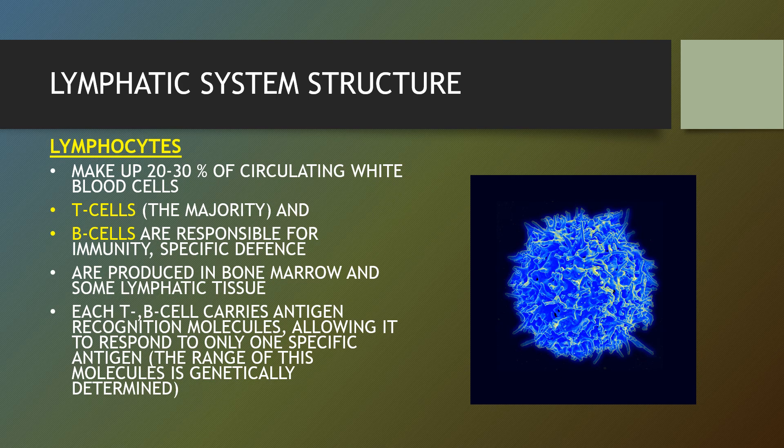Lymphocytes are the cells responsible for the body's ability to distinguish and react. Through receptor molecules on the surface, lymphocytes are able to bind antigens — foreign substances or microorganisms that the host recognizes as non-self — and help remove them from the body. They make up 20 to 30 percent of white blood cells. T cells are the majority and B cells are responsible for immunity. Specific defenses are produced in the bone marrow and some lymphatic tissues. Each T and B cell carries antigen recognition molecules allowing it to respond to only one specific antigen, and the range of these molecules is genetically determined.